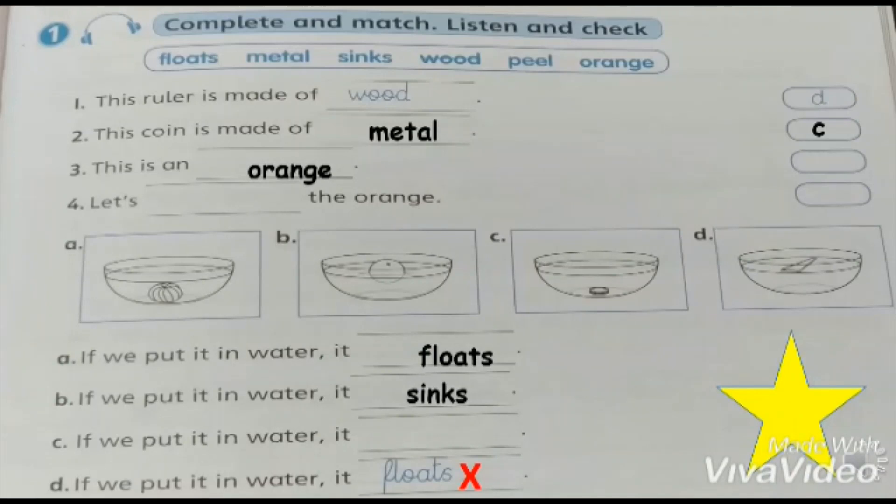Three, this is an orange. Excellent. Which picture? Picture number B. If we put it in water it floats. Four, let's peel the orange. Which picture? It is picture number A. If we put it in water it sinks. And pay attention that here we should write sinks not floats. Now listen and check your answers.